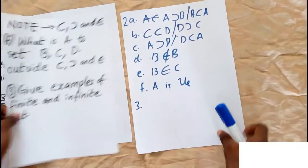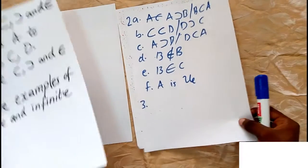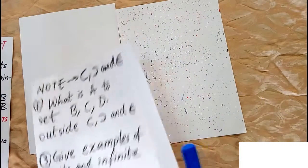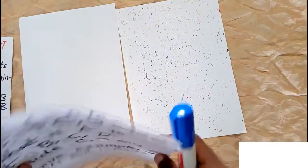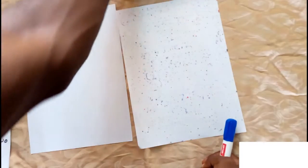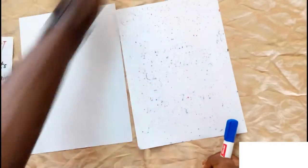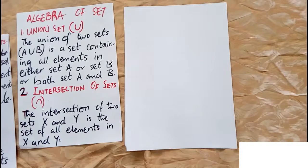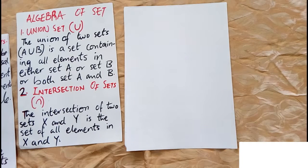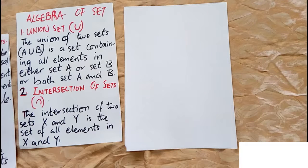The last question was to give examples of finite and infinite sets. That was last week's exercise. This week we'll be talking about algebra of sets, and the first topic we'll cover is union of sets.